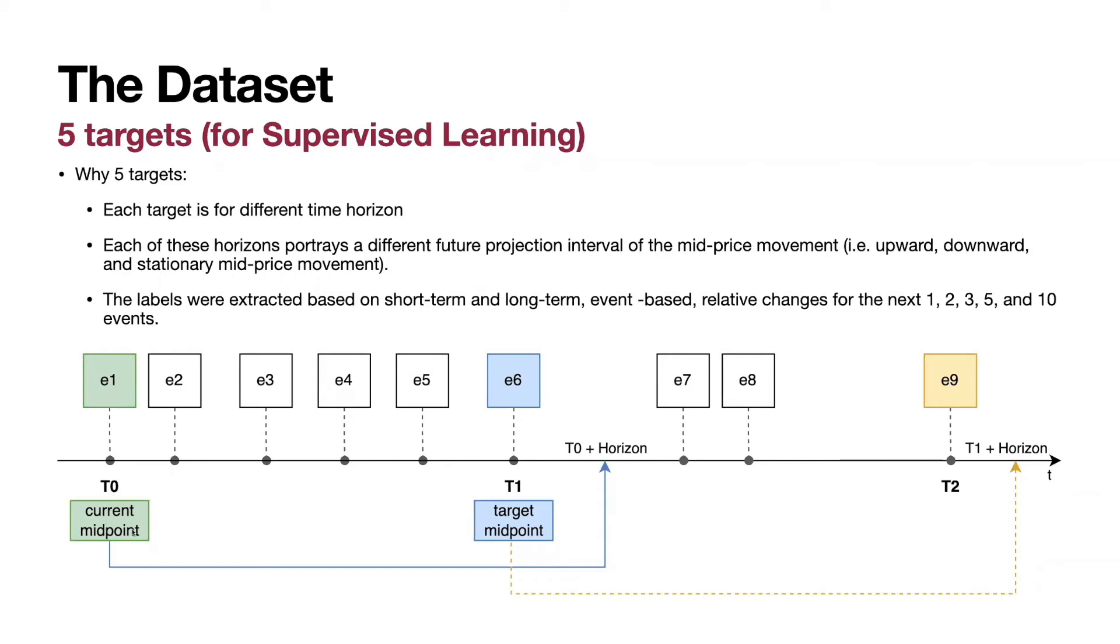The target is the mid-price at some particular future point in time. Take a look at this image. Imagine we are here. This is what our model has. What we want to guess is the future state of the market. We can predict future midpoint. Knowing the future midpoint, we will know what to do with our current shares.